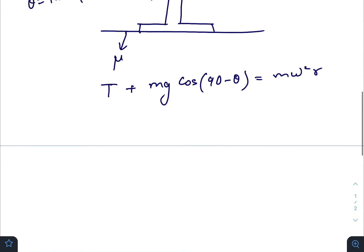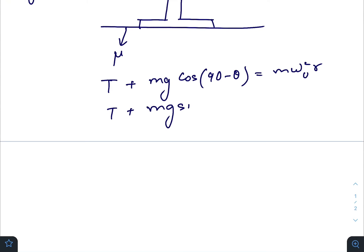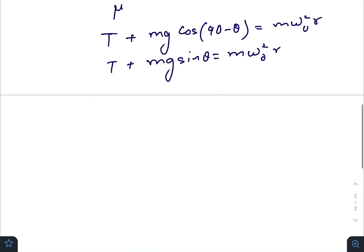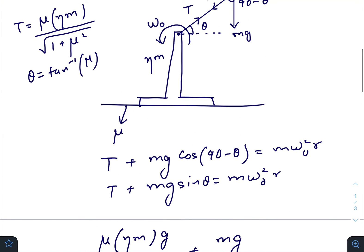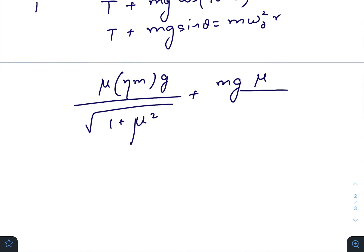T is μηmg/√(1+μ²) plus mg·sin(θ). Since tan(θ) is μ, sin(θ) is μ/√(1+μ²). So we have μηmg/√(1+μ²) + mg·μ/√(1+μ²) = mω₀²r. The m cancels out.